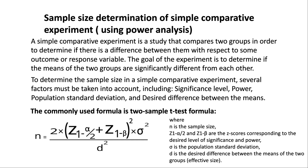The formula is: n = 2 × (z₁₋α/₂ + z₁₋β)² × σ² / d². Where n is the sample size; z₁₋α/₂ and z₁₋β are the z-scores corresponding to the desired level of significance and power; sigma is the population standard deviation; and d is the desired difference between the means of the two groups, i.e., the effect size.